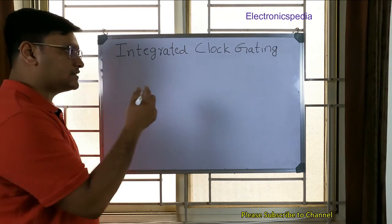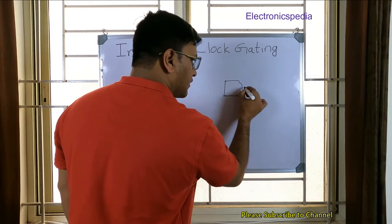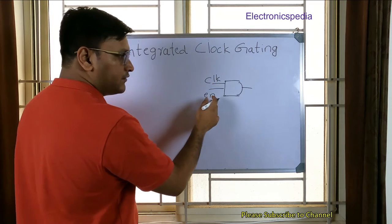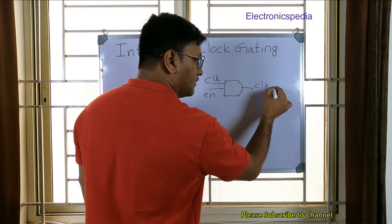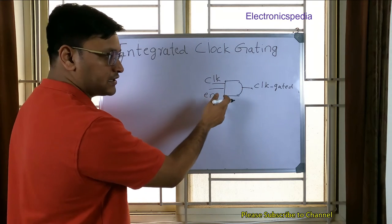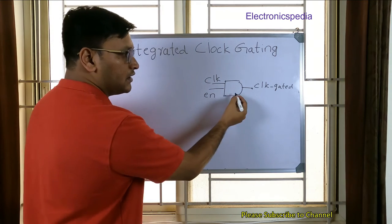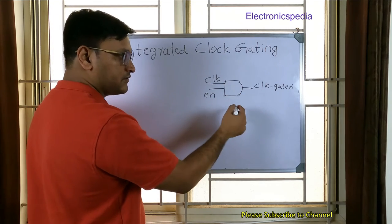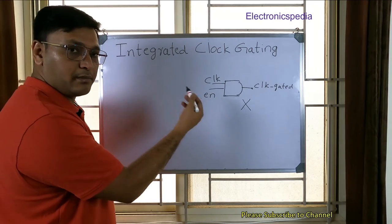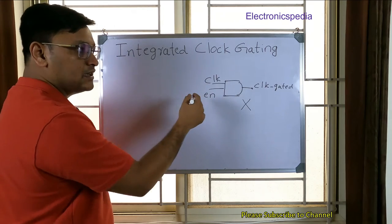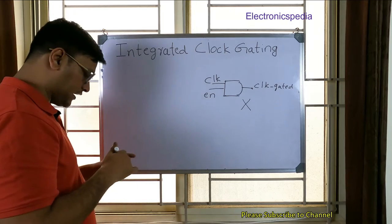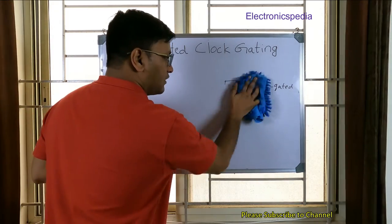In the previous video I explained the basic AND-gate-based clock gating cell, which takes a clock and an enable and produces a gated clock output. The problem with that AND-gate-based clock gating circuit is that it also causes clock chopping, so it cannot be used extensively in designs. To overcome the clock chopping problem, we use the integrated clock gating circuit, also known as the latch-based clock gating circuit.